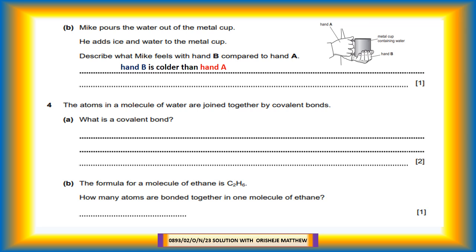Question 4. The atoms in a molecule of water are joined together by covalent bonds. Question 4a: What is a covalent bond? Covalent bond is two electrons shared between atoms. Question 4b: The formula for a molecule of ethane is C2H6. How many atoms are bonded together in one molecule of ethane? Two atoms of carbon plus six atoms of hydrogen equals eight atoms in one molecule of ethane.